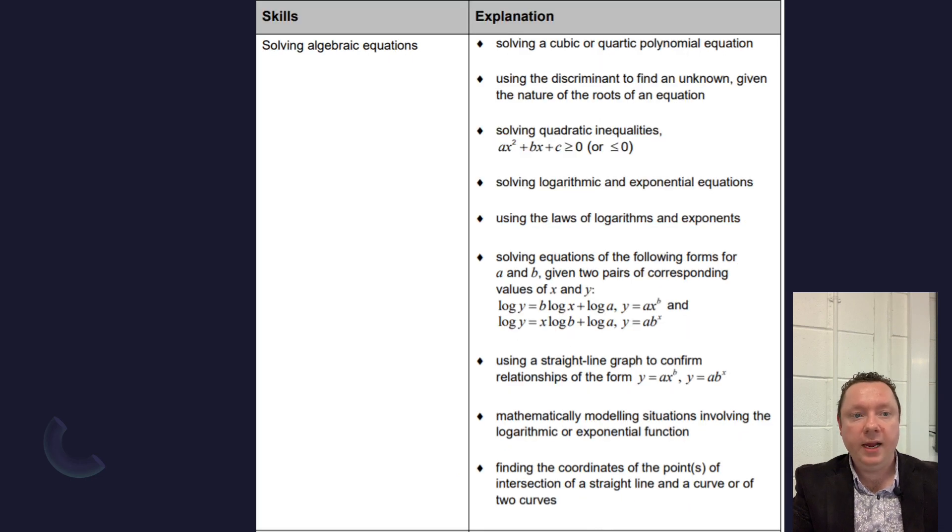On the next page, we're on solving algebraic equations. Quite a big one, this one. If we look down near the middle, it says solving equations of the following forms for a and b, given pairs of x and y. And they're log graphs. Log y equals b log x plus log a. Log y equals x log b plus log a. Those types of equations where they're turning in almost straight lines are gone, but you might have to use a straight line to confirm that it is indeed an exponential graph still. So be careful there that you don't get mixed up between the two. But that's gone.